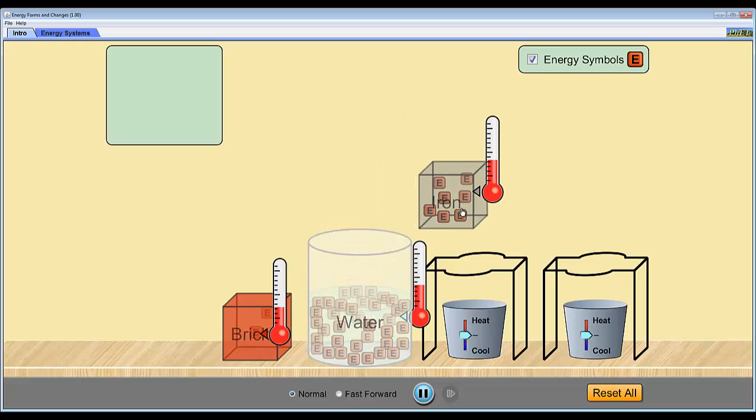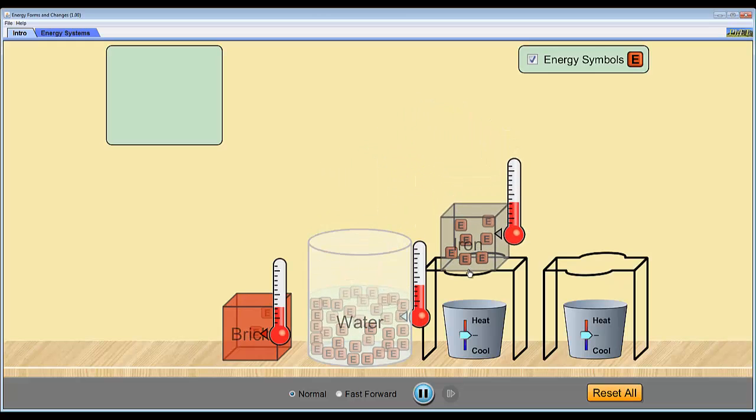OK. So let's try again now. And let's have a closer look at what happens to the temperatures. So I'll heat the iron up, I'll give energy to the iron, so heat is transferred to the iron, which increases the internal energy of the iron.